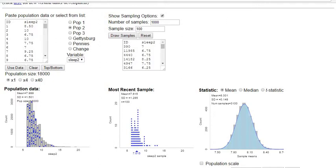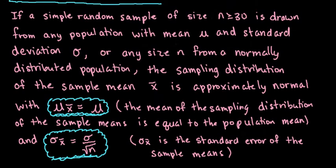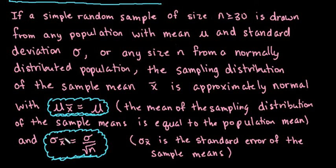To recap: the central limit theorem states that if a simple random sample of size n greater than or equal to 30 is drawn from any population with mean mu and standard deviation sigma, or from a normally distributed population of any size, the sampling distribution of the sample mean mu sub x-bar will approach the population mean, and the standard error will approach sigma divided by the square root of n. Hopefully that helped clear up the central limit theorem. Thanks for watching.